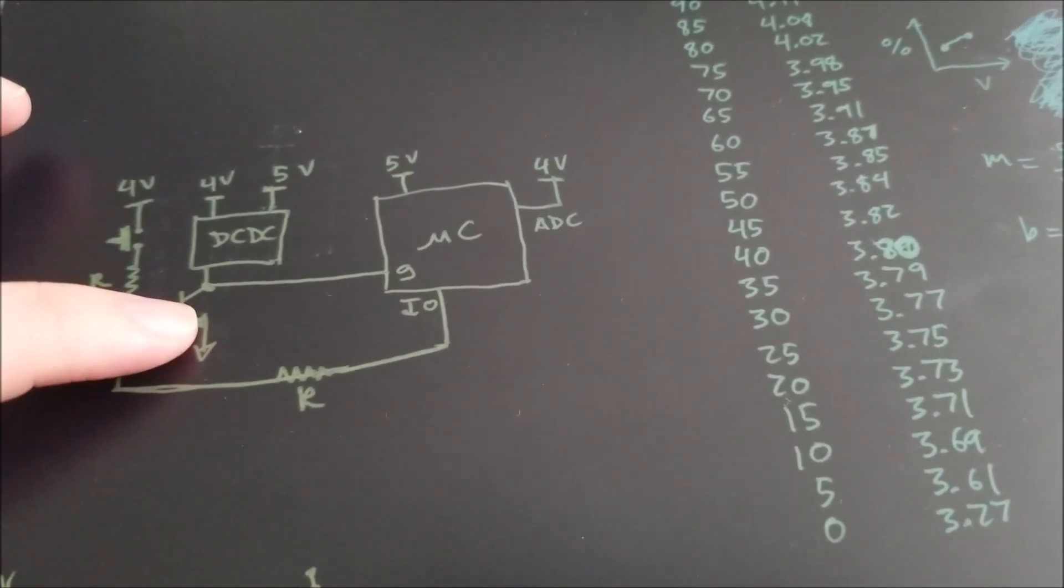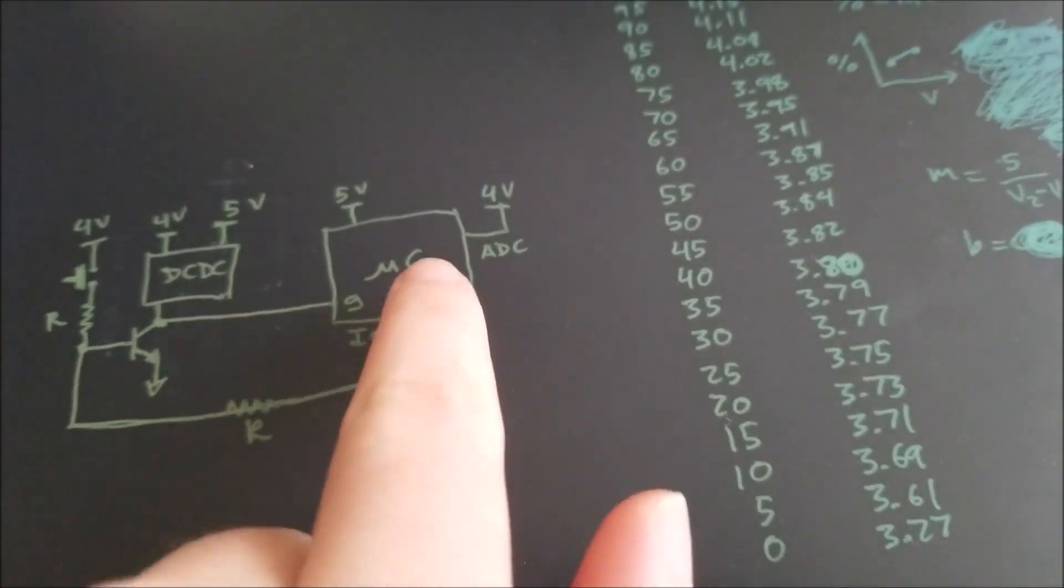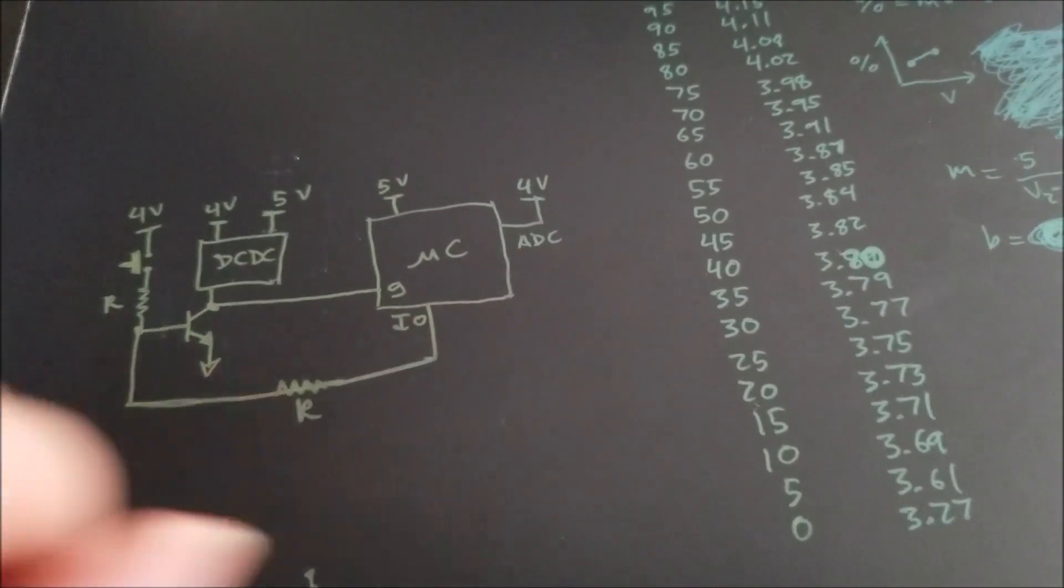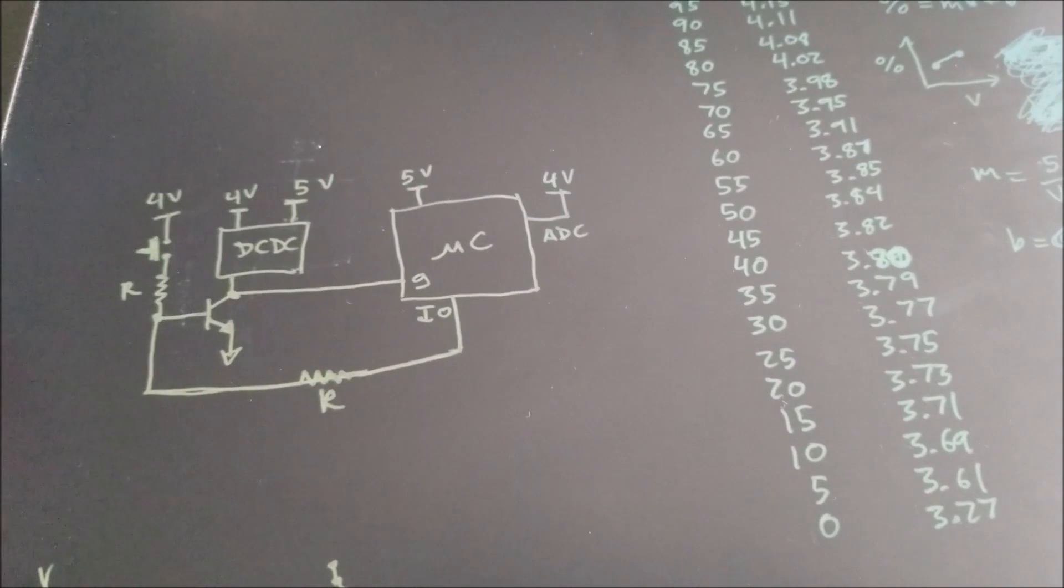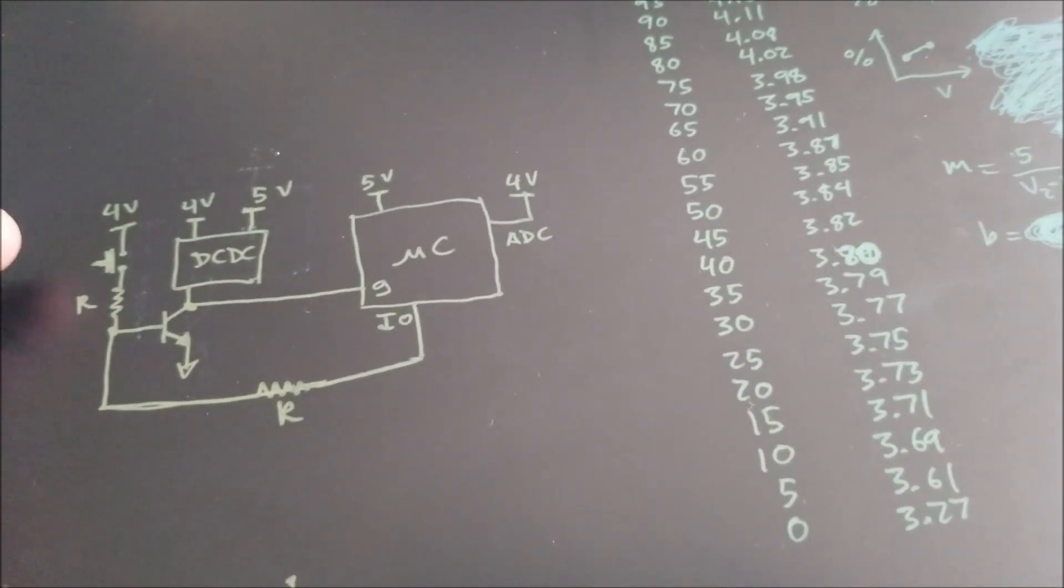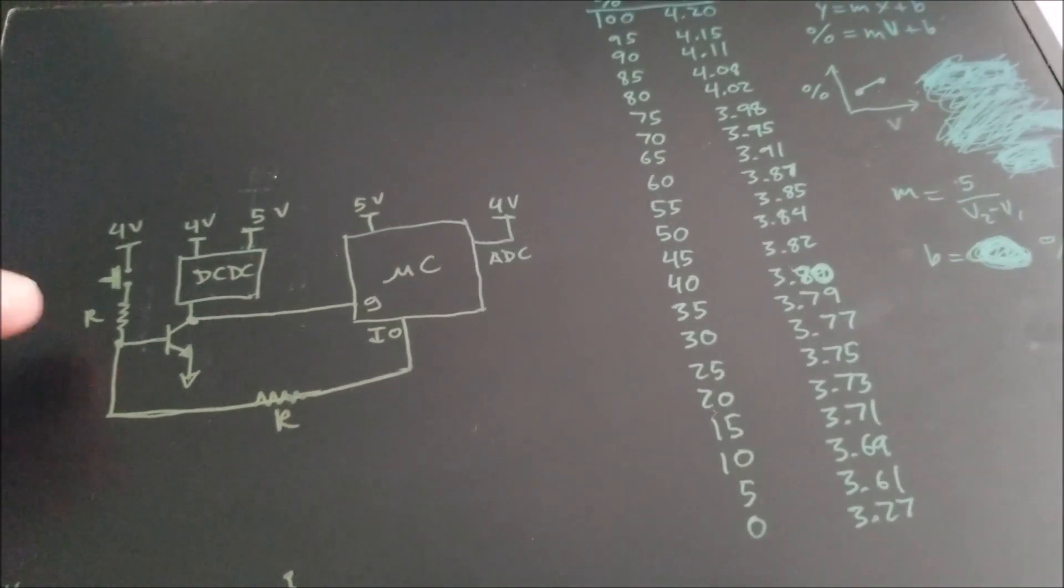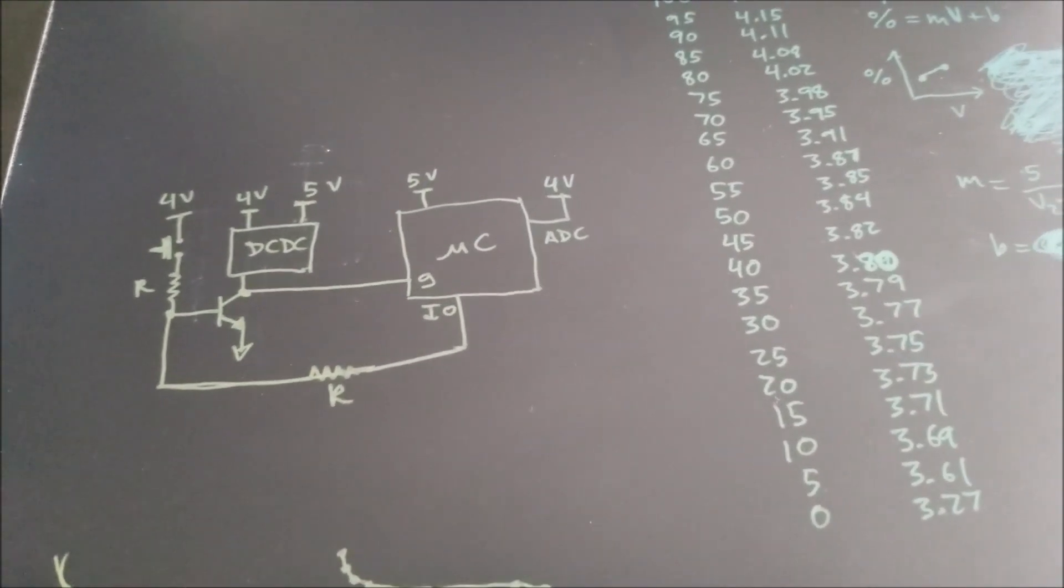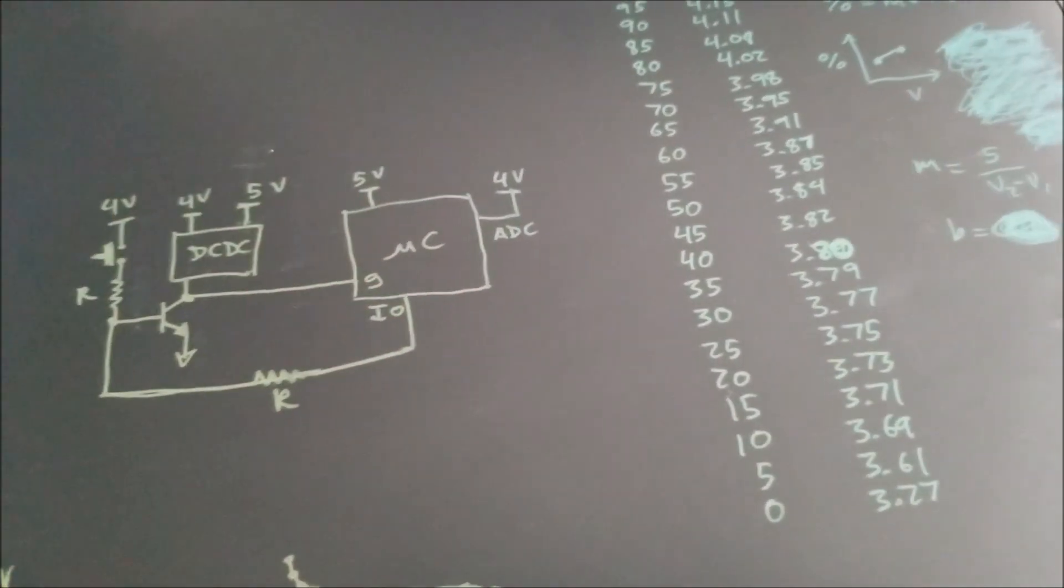So when you press the button, it'll turn on this transistor, which will turn on the DC DC converter, which powers the micro. And as soon as the micro boots up, it'll pull the transistor high using this IO pin. So it'll keep itself on for as long as it needs. And then once it times out after, I don't know, like five or 10 seconds, it'll pull that low and shut itself off basically. And then it can only wake up once you press the button again, and I might have another input, tapping off onto this transistor from the power bank circuit that I got.